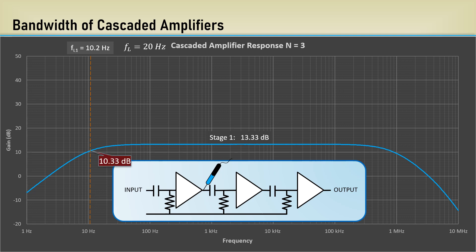Here's the lower minus 3 dB point at 10.33 dB. At 10.2 Hz, we would expect the output to be the gain of stage 2 at 13.33 dB plus the input of stage 1 at 10.33 dB for a total of 23.66 dB.